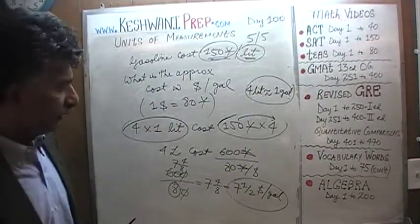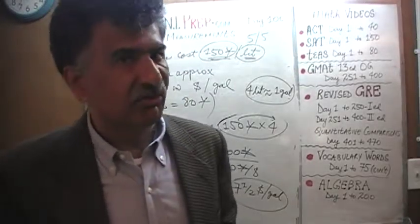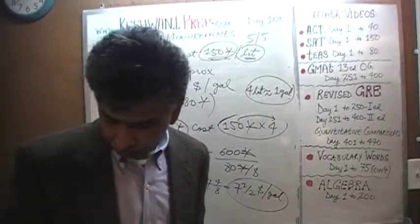7 and 4 8ths, of course the same as 7 and a half. Turns out it costs 7 and a half dollars per gallon. Quite expensive. Almost twice as expensive as what we pay here. Let's do one more.